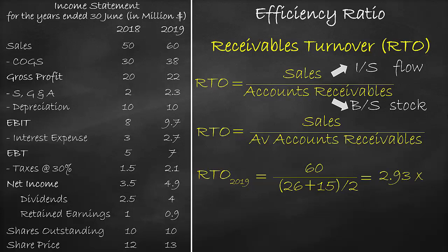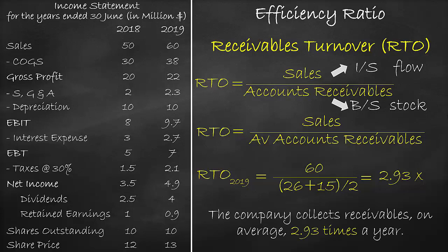The unit of the Receivables Turnover is times. It means that the company collects Receivables, on average, 2.93 times a year. The higher the Receivables Turnover, the better.